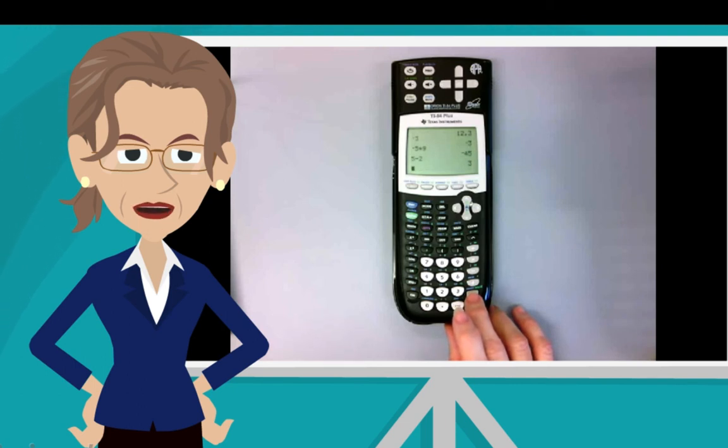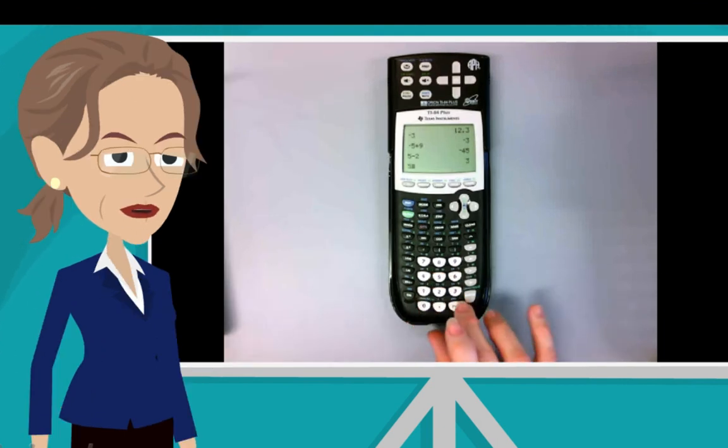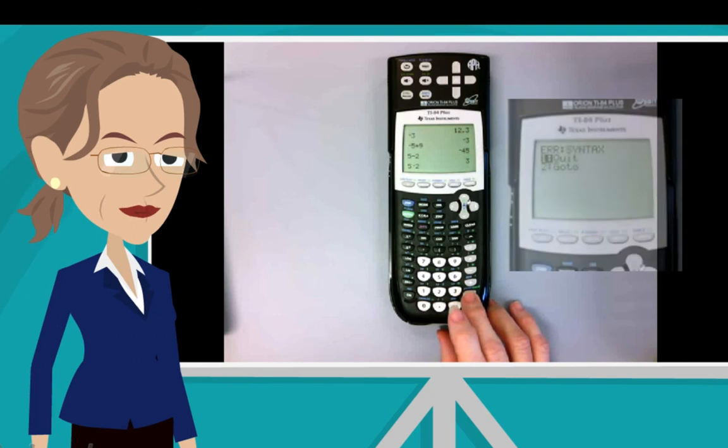I am now going to show you what happens if I use the negative symbol instead of the subtraction key, but I do not recommend that you imitate this action. Just listen to it. Five. Minus. But I am pressing the negative symbol rather than the subtraction key. And now two. Now the calculator said exactly the same thing. Five minus two. But when I press enter, I hear syntax error quit.